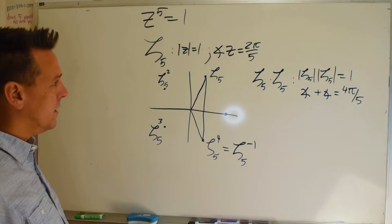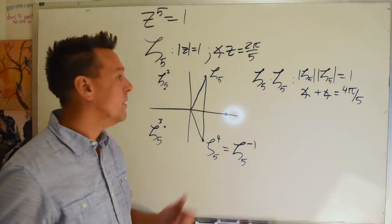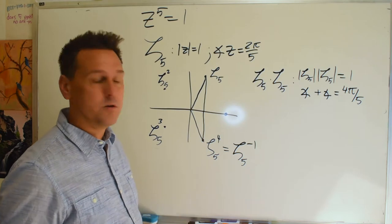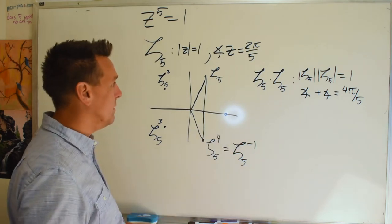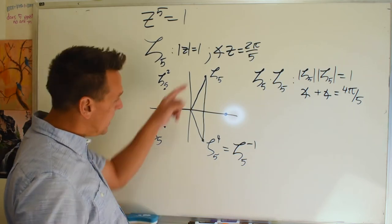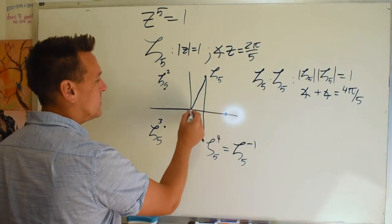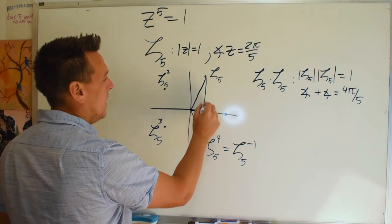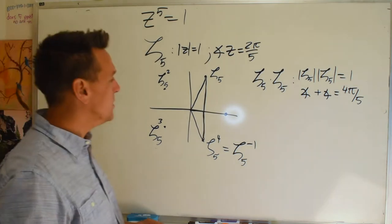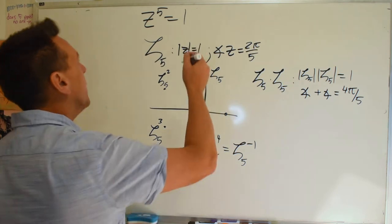Since all magnitudes are one, the inverse has the same magnitude — and the angle is opposite. In terms of components, a number and its inverse on the unit circle have the same horizontal component but opposite vertical components. This symmetry is going to be useful later, so keep it in the back of your mind. Now I want to go to this polynomial and do some factoring.